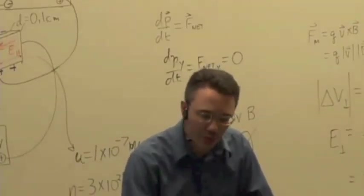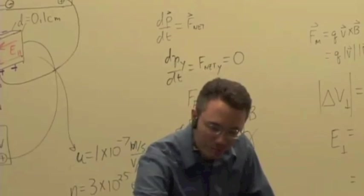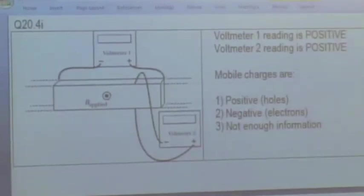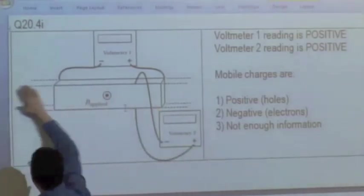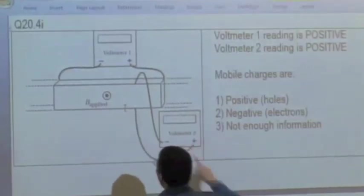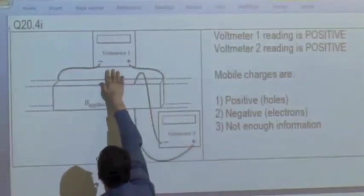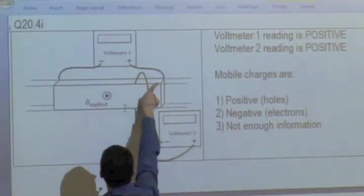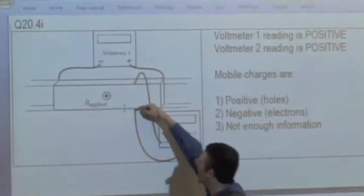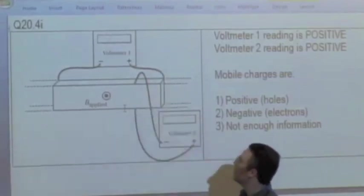Let's try a question, since we've been doing this for quite a while. So another application of the Hall Effect: we have a long bar, and I'm just showing a cross section of this bar. You can imagine this bar connected to a circuit somewhere, stretching along the x-axis. Voltmeter 1 measures the potential difference across the length of the bar, and voltmeter 2 is measuring the potential difference perpendicular to the bar.